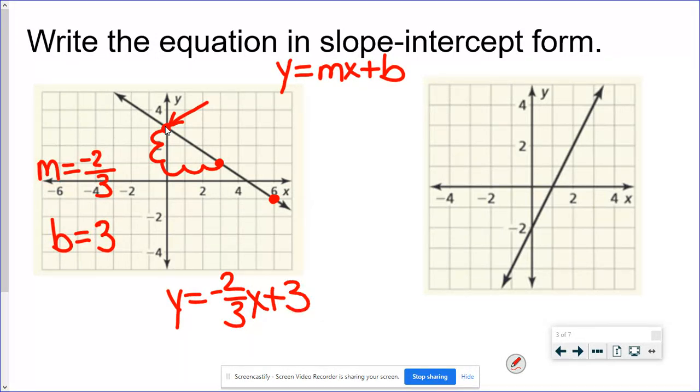So this is going to be y equals negative two-thirds x plus three. I just said when you're talking about the slope don't tag that x on there however some people are so concerned about finding these two numbers when they write their equation they totally forget the x in the equation. So make sure that you're getting that x in the equation.